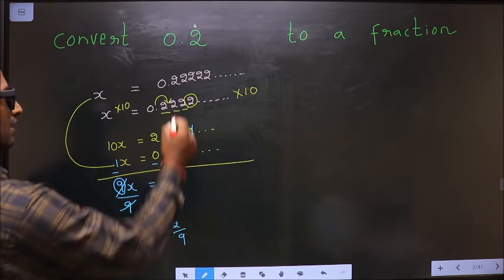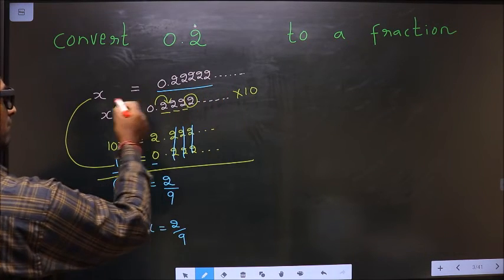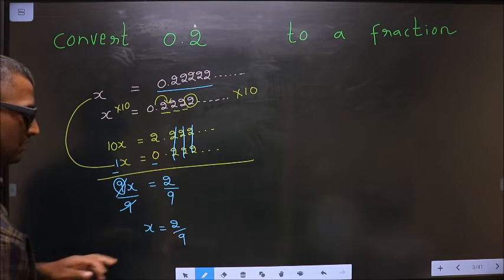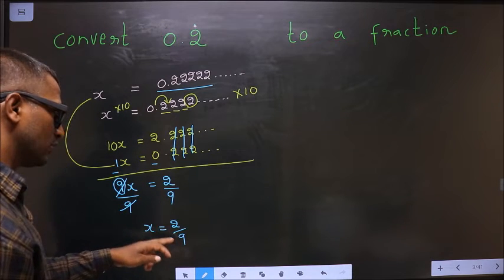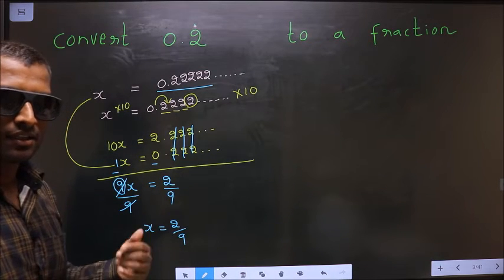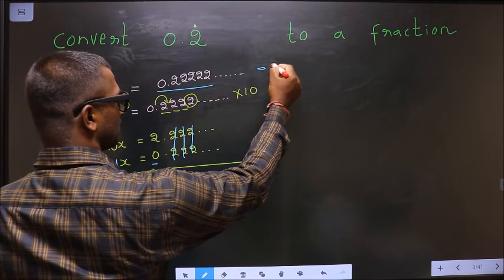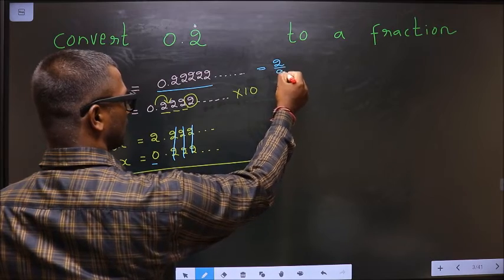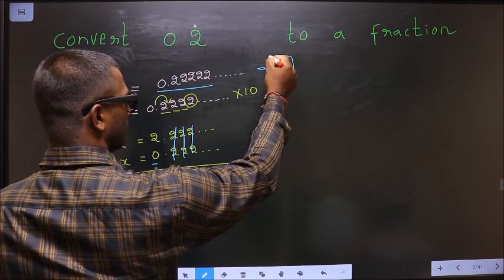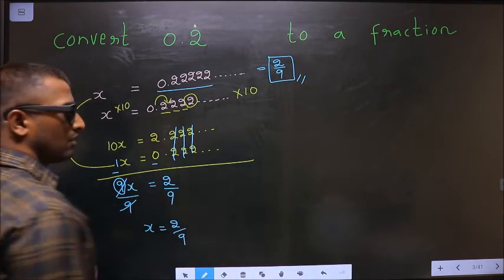Now, this recurring decimal we considered to be x. And we got fraction 2 by 9 to be x. That implies only one thing. And that is, this recurring decimal equals 2 by 9. So, this is the fraction.